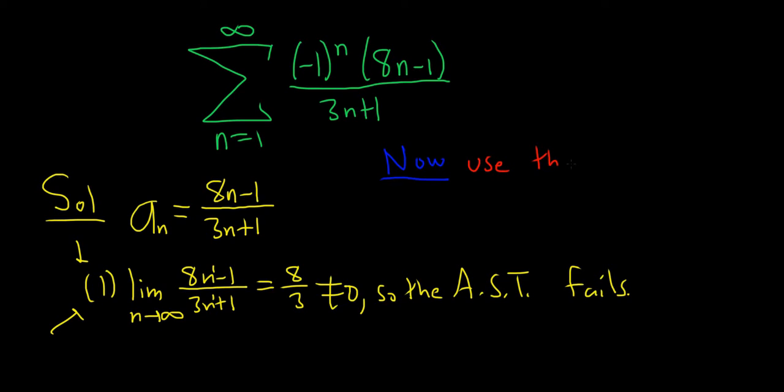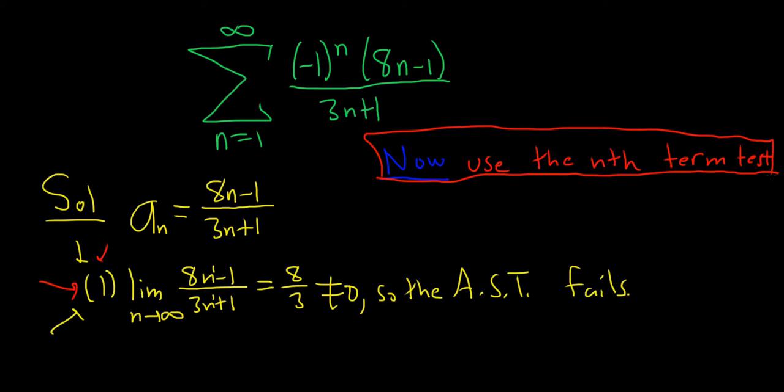Now use the nth term test. This is extremely important. Whenever the alternating series test fails, whenever condition 1 fails, you want to go back and use the nth term test to show divergence.